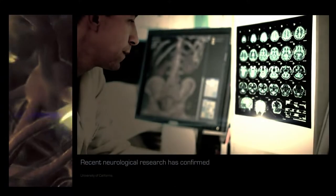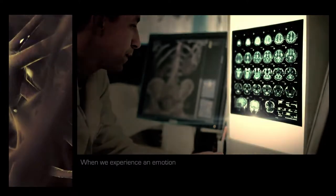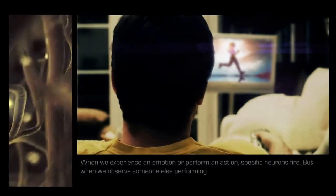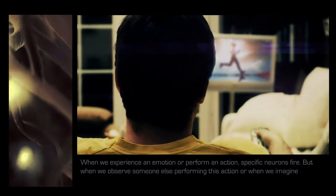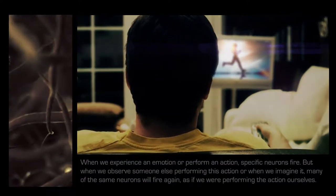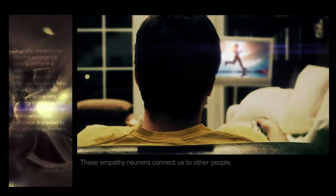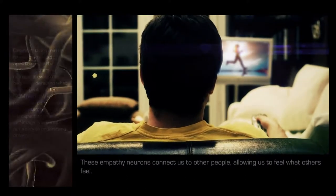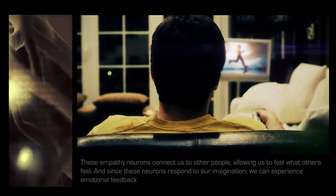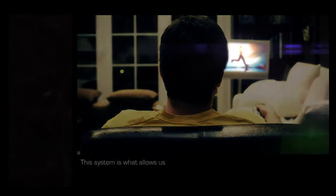Recent neurological research has confirmed the existence of empathetic mirror neurons. When we experience an emotion or perform an action, specific neurons fire, but when we observe someone else performing this action or when we imagine it, many of the same neurons will fire again, as if we were performing the action ourselves. These empathy neurons connect us to other people, allowing us to feel what others feel. And since these neurons respond to our imagination, we can experience emotional feedback from them as if it came from someone else. This system is what allows us to self-reflect.